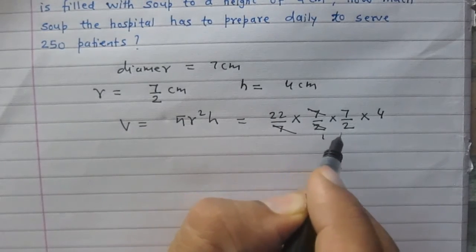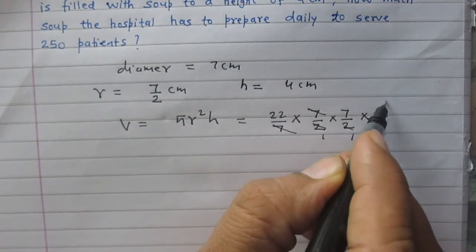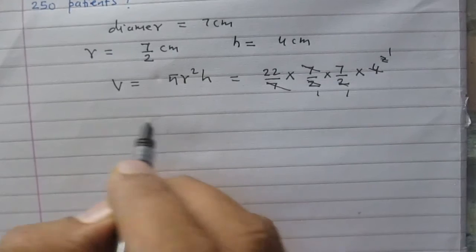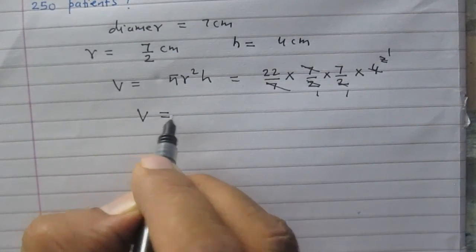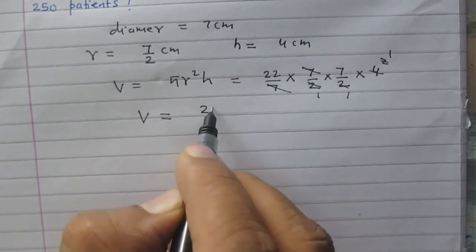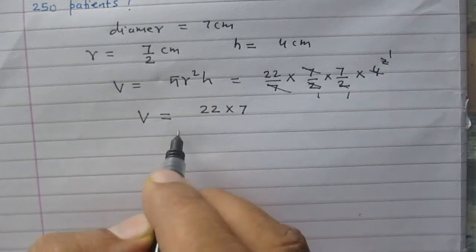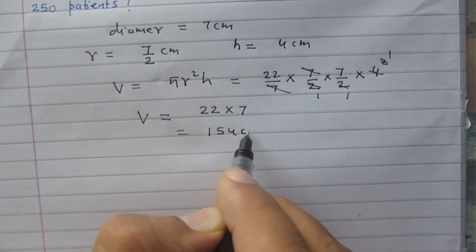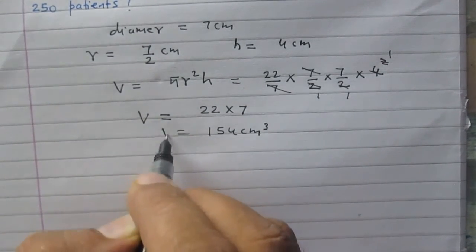After calculation, we will get the volume of soup in a single bowl is 22 multiplied by 7, which is 154 cm cubed.